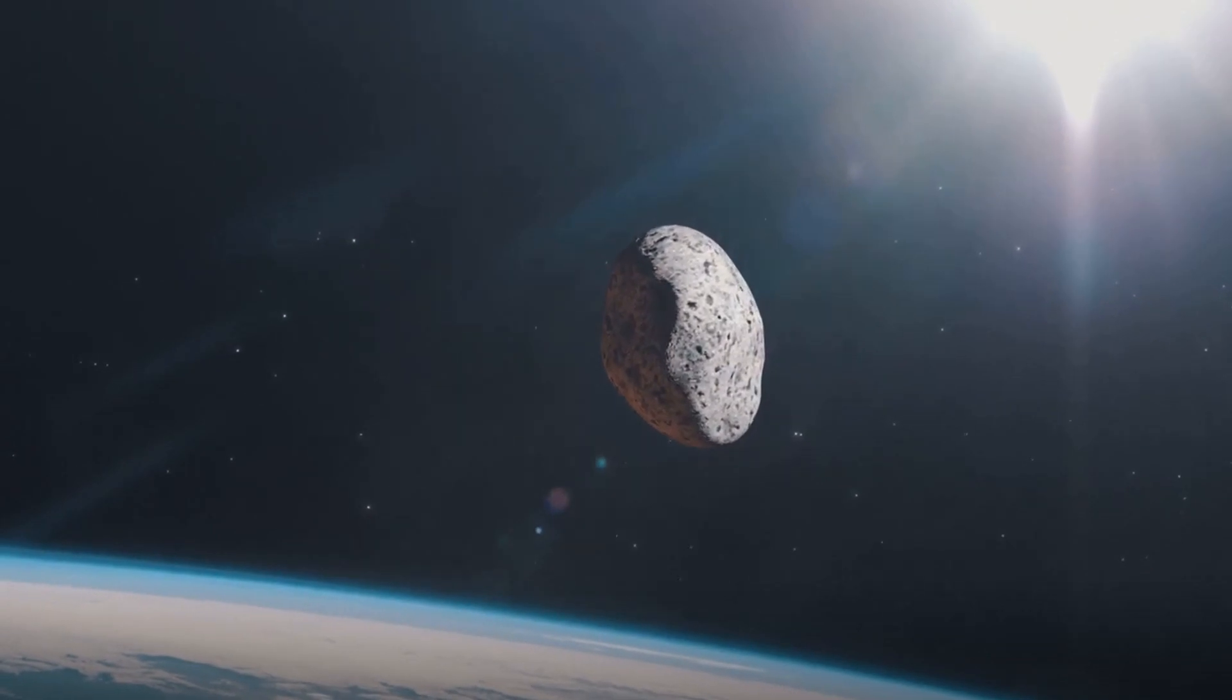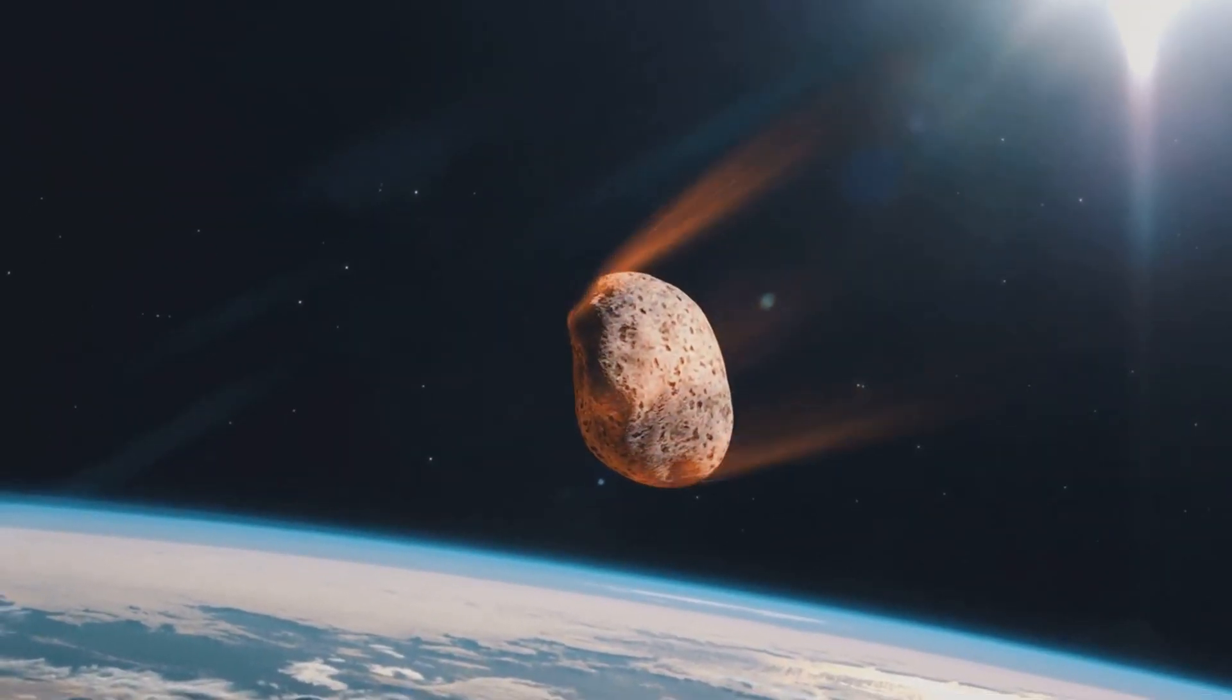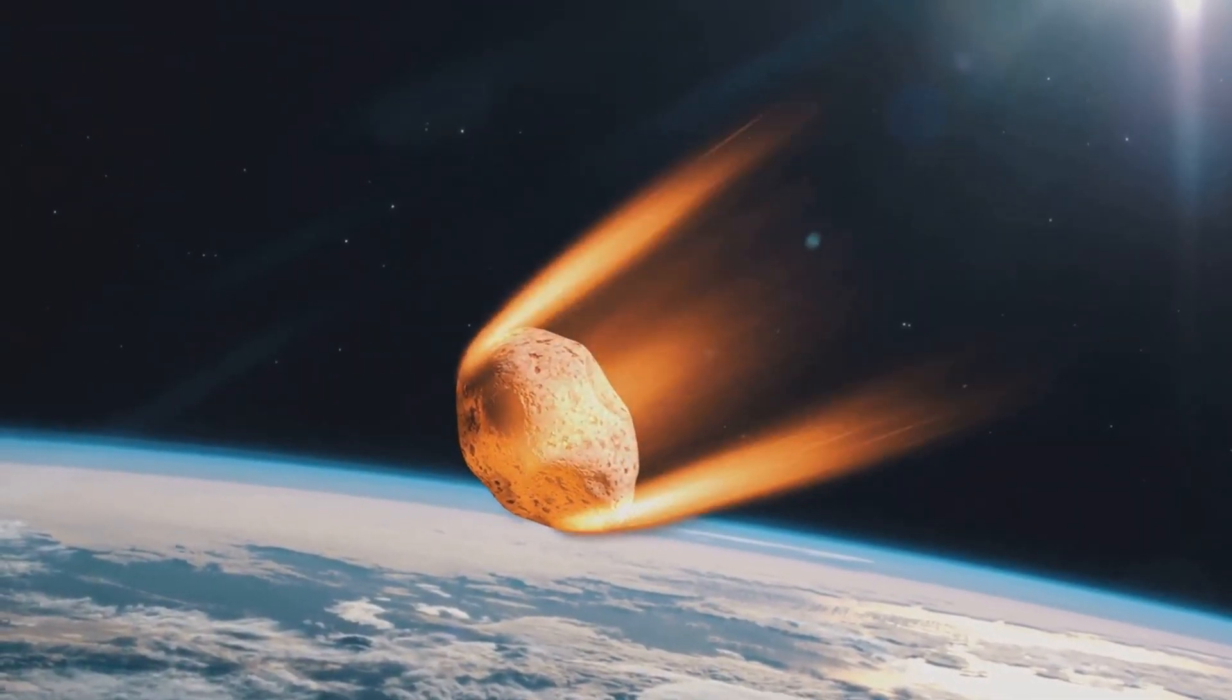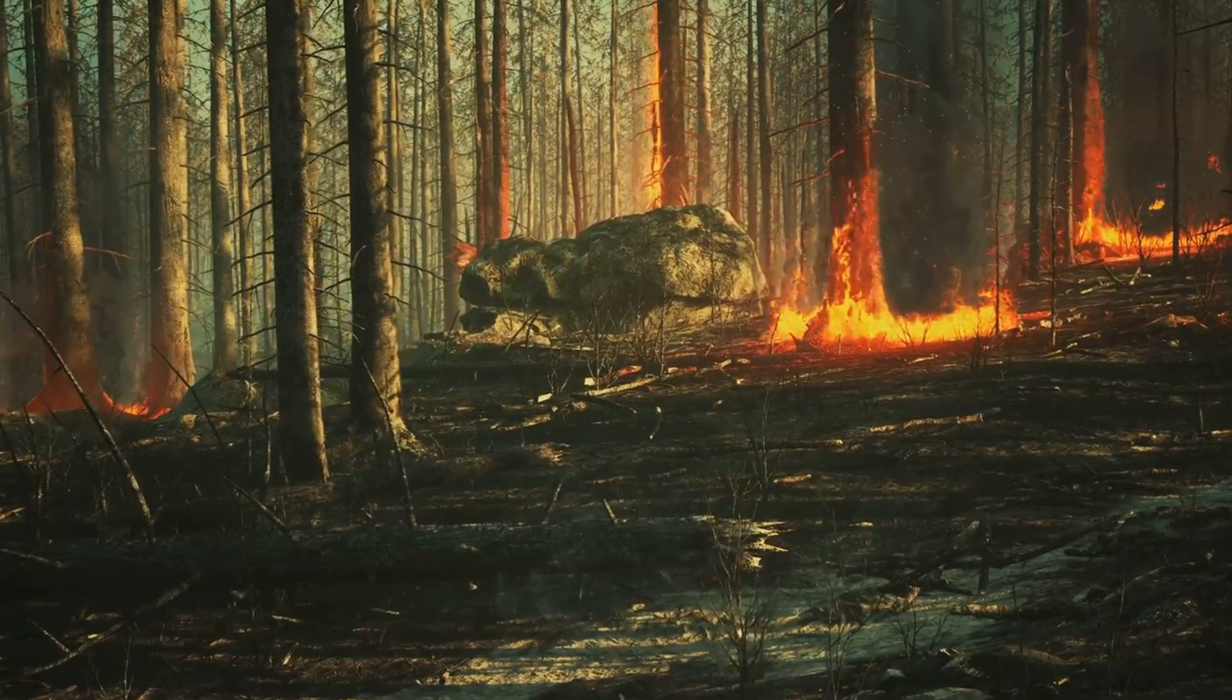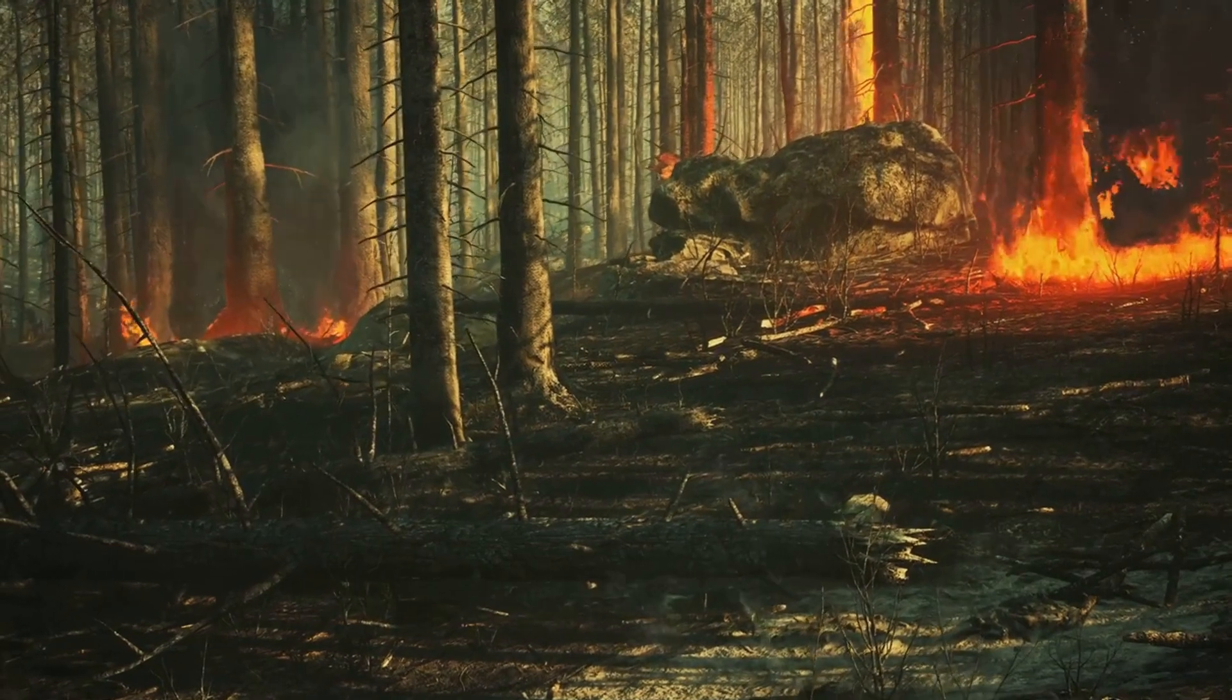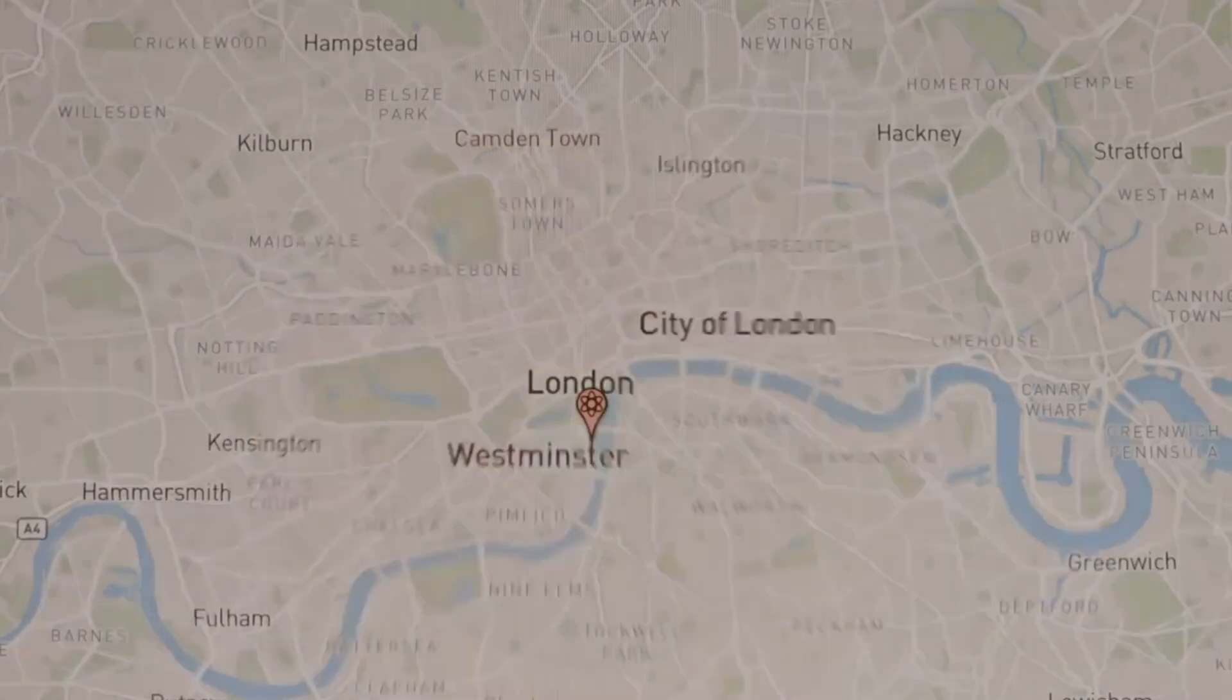Rewind to the morning of June 30th, 1908. The tranquillity of Siberia's wilderness is shattered as an asteroid no bigger than a five-story building races through the sky. This cosmic bullet hurtling at a phenomenal speed doesn't even touch the Earth. Instead, it explodes in the sky, releasing energy equivalent to a thousand Hiroshima bombs. The sheer force of the blast flattens an estimated 80 million trees over an area of two thousand square kilometers. That's roughly the size of a city like London.